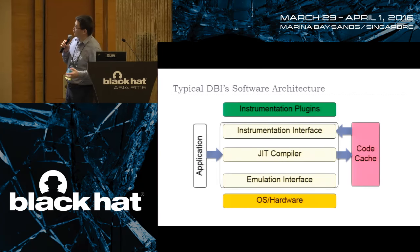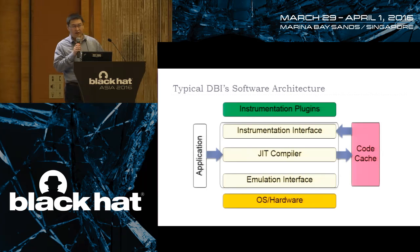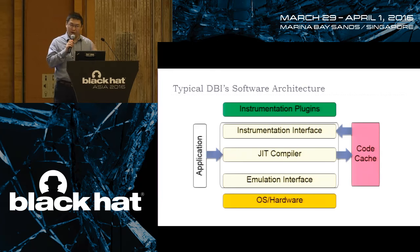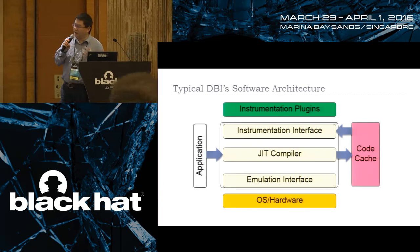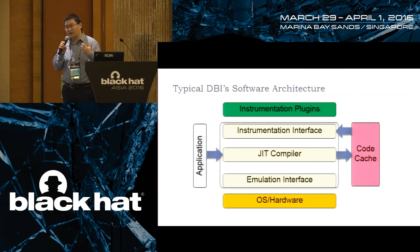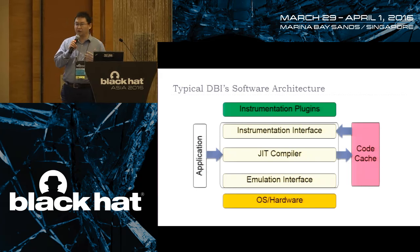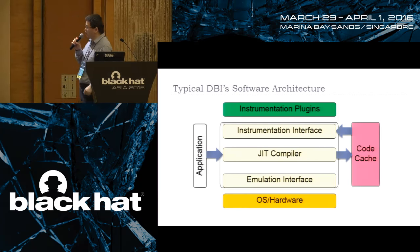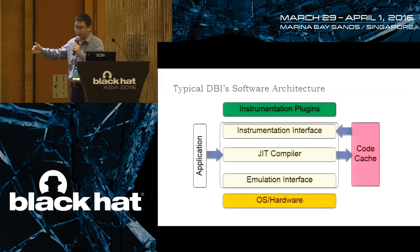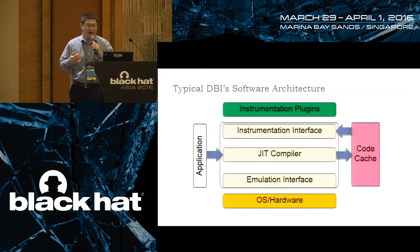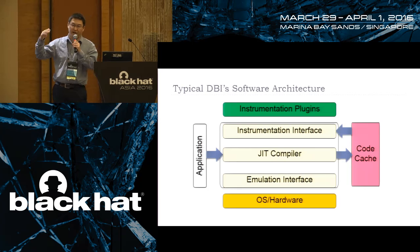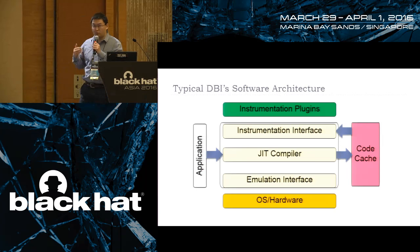Before our talk we want to review the typical DBI architecture first. If you look at the DBI implementation today, the most important part is the capability to translate native code, using a JIT compiler, to another native code. During this phase you can insert the instrumentation framework capability to target the code — that's how you can monitor the binary and do the binary translation.